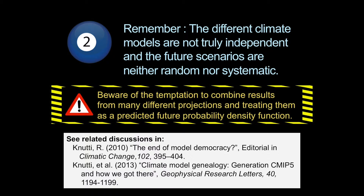Number two: remember that different climate models are not truly independent, and the future scenarios are neither random nor systematic. You can go to those data portals and right-click for ten different global climate models produced by different institutes, right-click for three different emission scenarios — low, medium, and high — and get a whole bunch of data. So much that it looks like a really nice probability density function when you put it together.